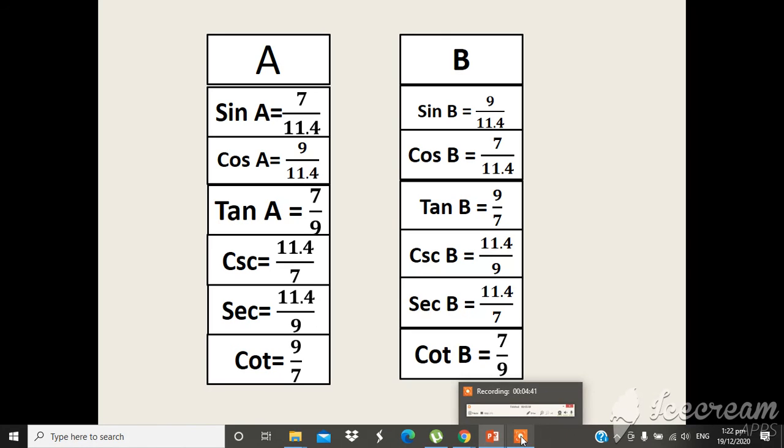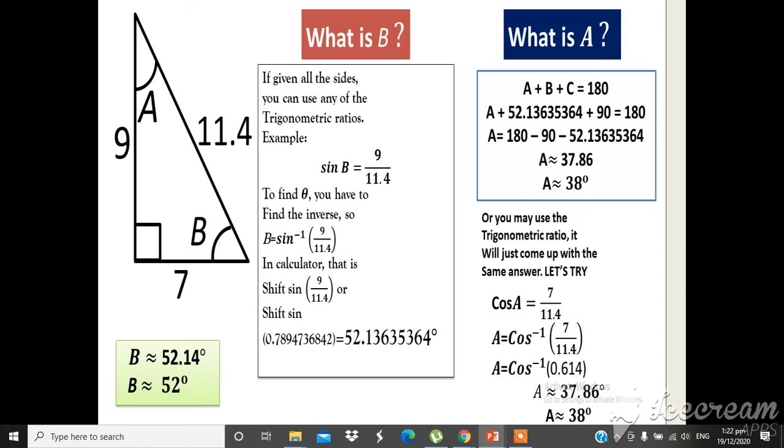Yes, sir. Opo, sir. Very good. So let us proceed to another activity. For example, diba, ma-mao niyong problem, 11 point 4. If we are going to find the angle B, kaning angle B, we can use now sine trigonometric ratio, sine function. Diba? Sine B is opposite.